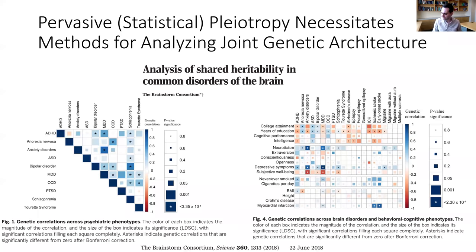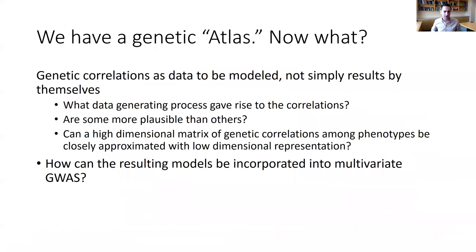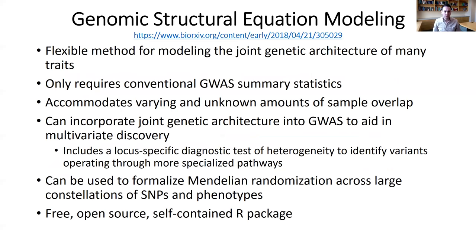What do we do with these genetic atlases? I would argue that genetic correlations are data to be modeled, not simply results by themselves. We can ask: what data generating process gave rise to the correlations? Are some more plausible than others? Can a high-dimensional matrix of genetic correlations amongst phenotypes be closely approximated with a low-dimensional representation? And how can these resulting models be incorporated into multivariate discovery?